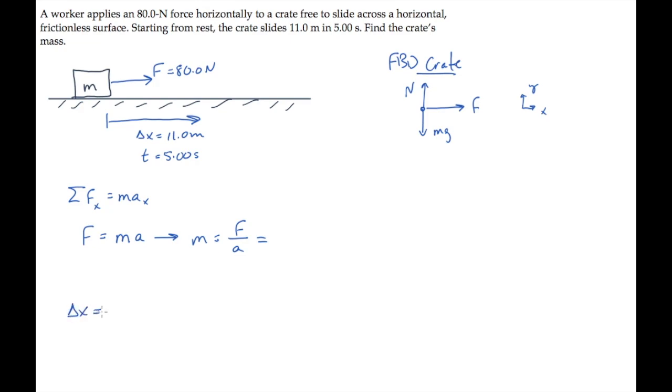The horizontal displacement kinematic equation tells us that delta x equals v naught t plus half at squared. The crate starts from rest, so that v naught is zero. We can solve this for the acceleration now. It equals twice the displacement divided by time squared.